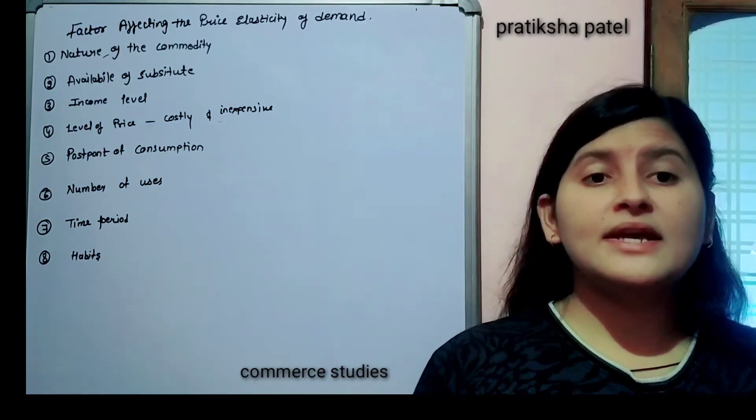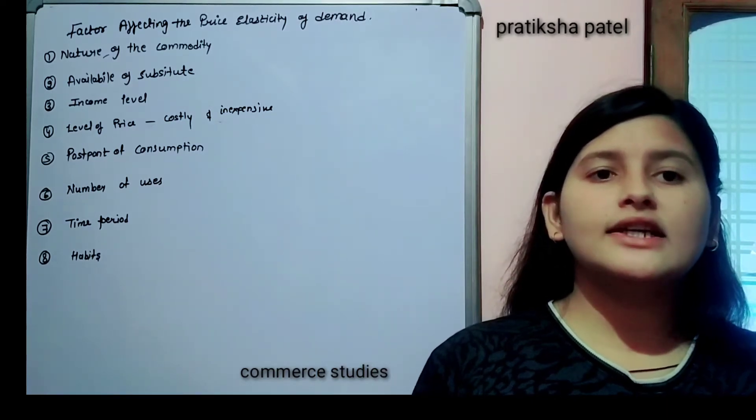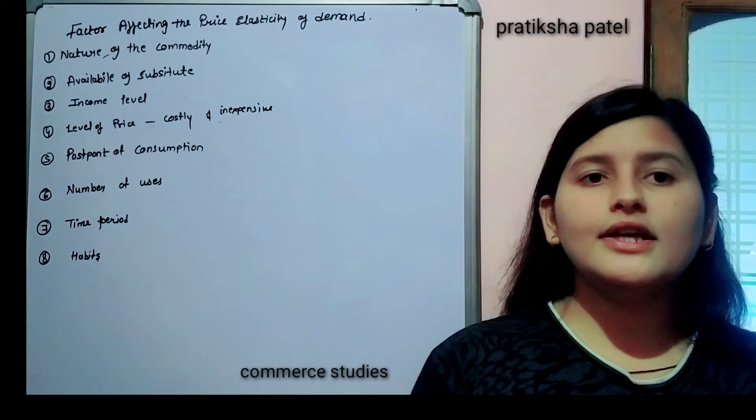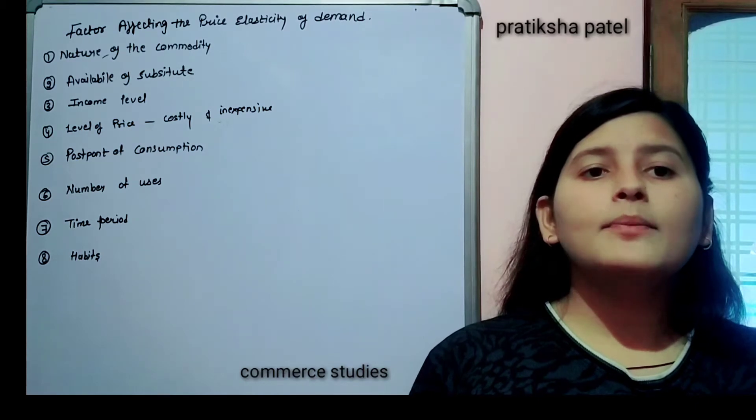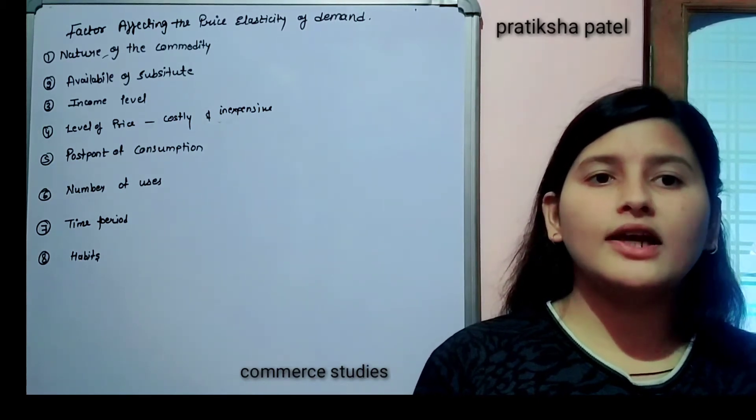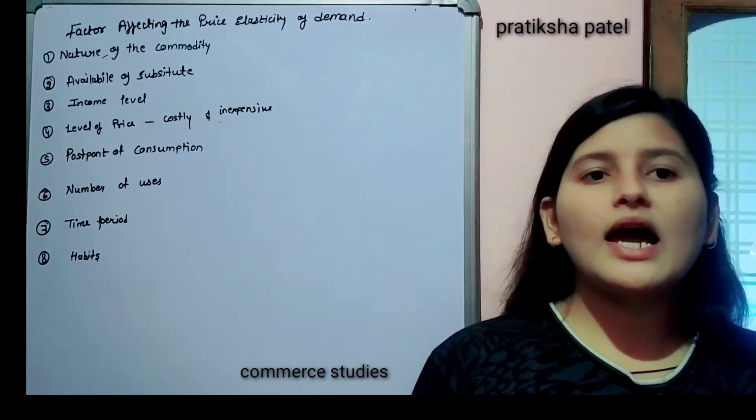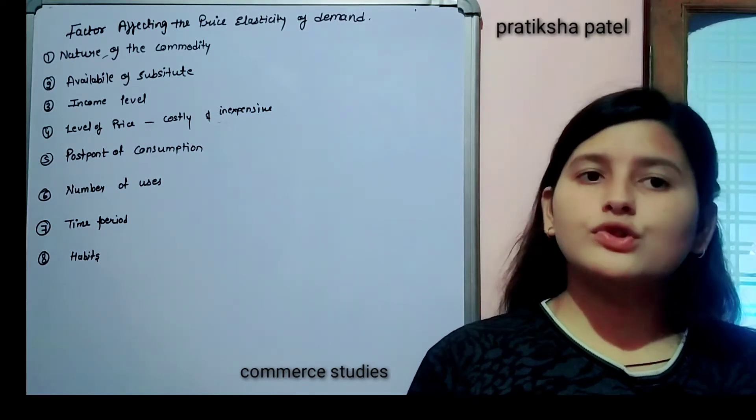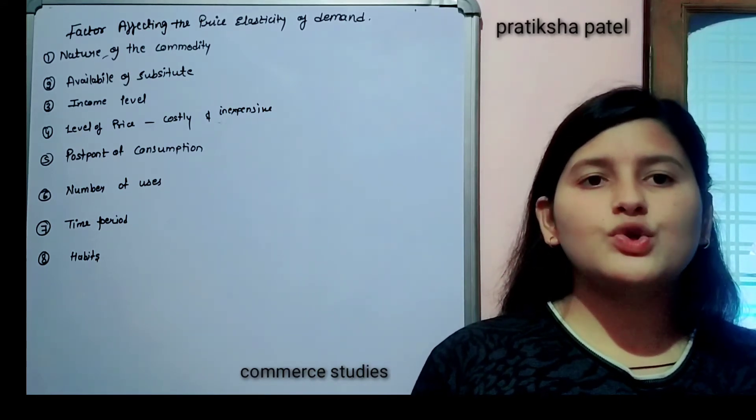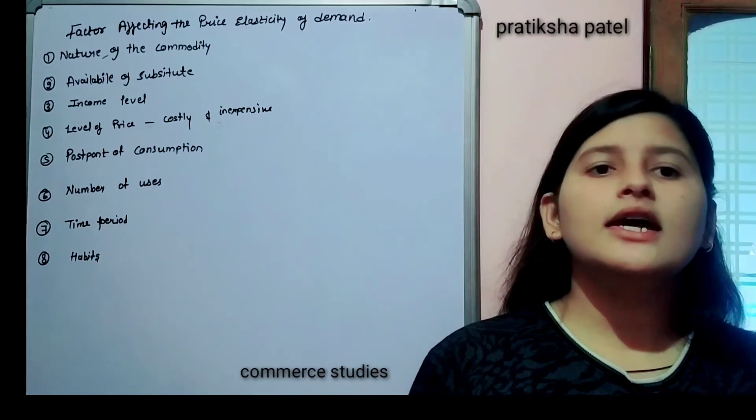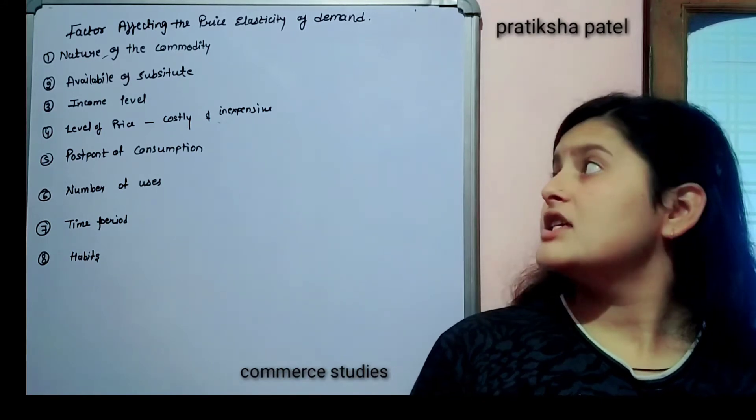Nature of the commodity - basically if we talk about necessities of life, necessities of life means goods that are necessary, commodities like medicine, vegetables, food grains. These are our means of survival. We cannot make compromise. We cannot make any compromise with these. We have to buy such commodities, whether price increases or decreases. There is no fluctuation in demand of such commodities.